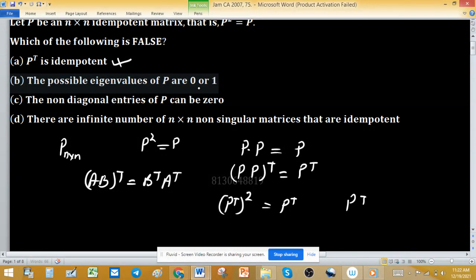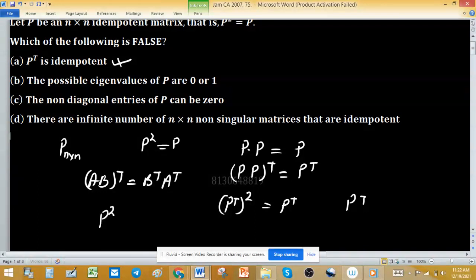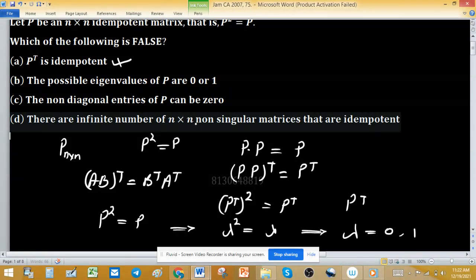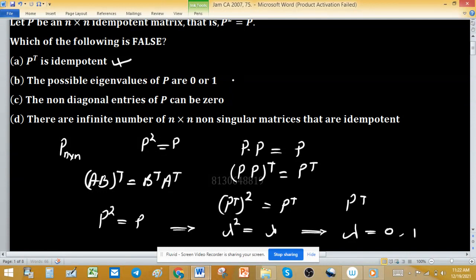The possible eigenvalues of P are 0 or 1. This is option B. Because P square equals to P, P satisfies this equation, implying that lambda squared equals to lambda is the characteristic equation. This implies lambda equals either 0 or 1. So possible eigenvalues of P are 0 and 1. This is true, but not desired.